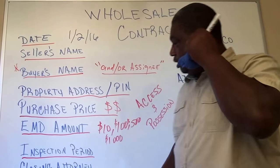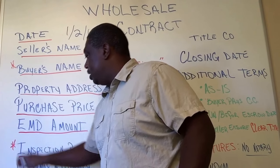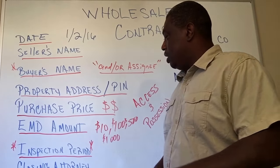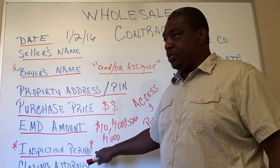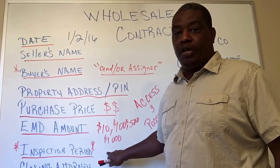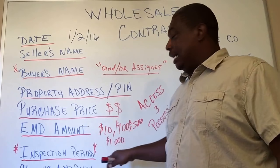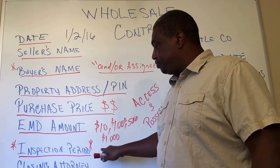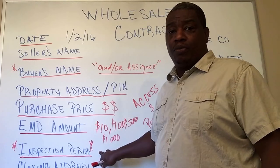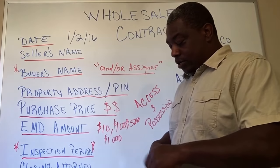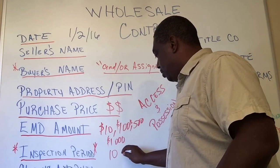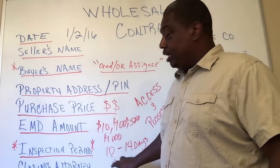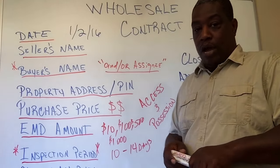Next is the inspection period. I get a lot of questions about this — why do you need an inspection period? The importance is that by law, if you're within the inspection period, you can back out of the contract. Not to say that's what you want to do, but you're essentially hedging your bet against your earnest money deposit. In the event you can't find a buyer, you can get out of the contract. Normally people do 10-day or 14-day inspection periods.